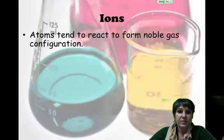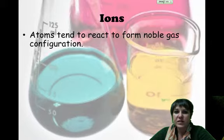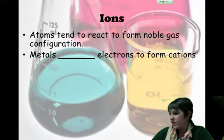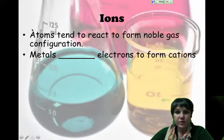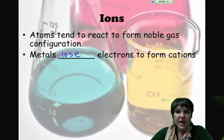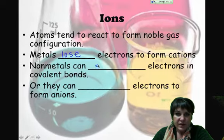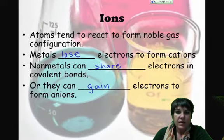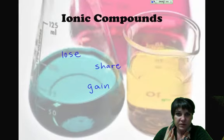So first of all, let's look at ions. Basically, we know that atoms tend to react in such a way that they would form the noble gas configuration, right? So that means that a metal would tend to lose electrons so that it can form cations.